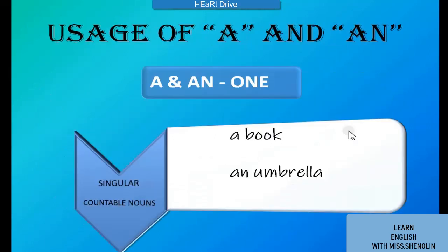Now let us see the usage of 'a' and 'an.' 'A' and 'an' mean one. The meaning of 'a' and 'an' is one. For example, 'I want an apple,' which means 'I want one apple.'